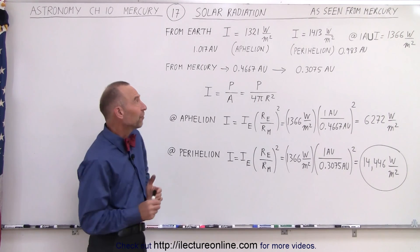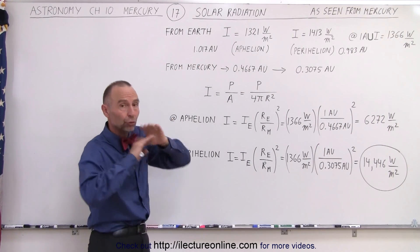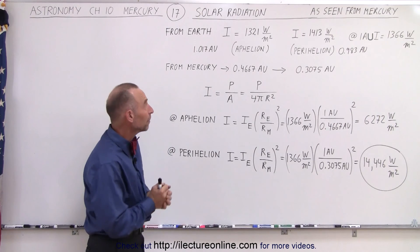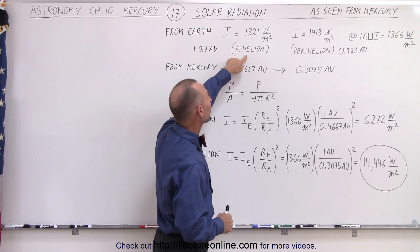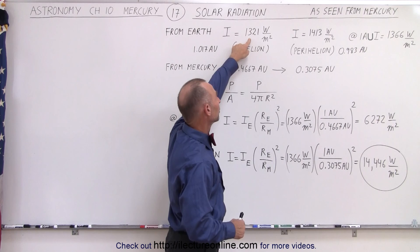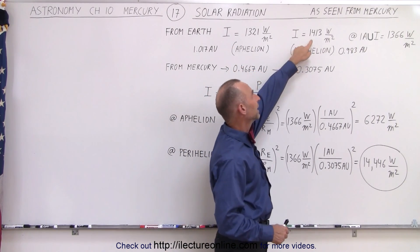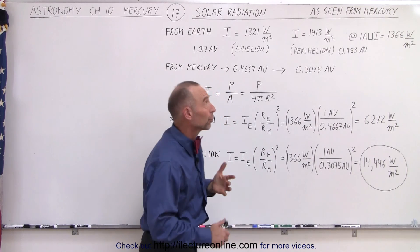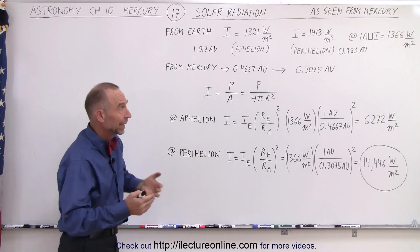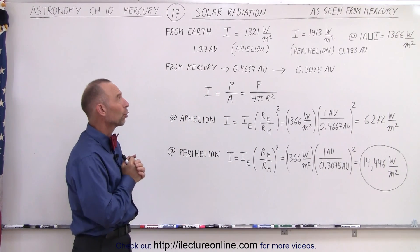There are also differences associated with the fact that Earth's orbit is not a circle, it's an ellipse. At aphelion when we're farther away it drops to about 1321 watts per square meter, and when we're closer to perihelion it increases to about 1413 watts per square meter. It depends upon where Earth is in its orbit.